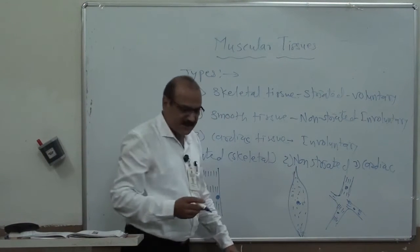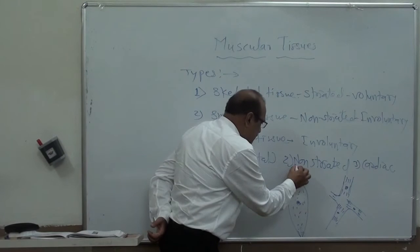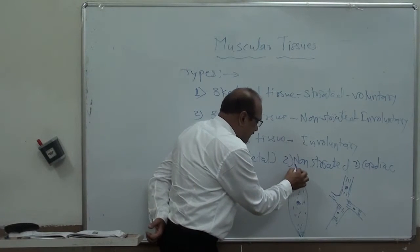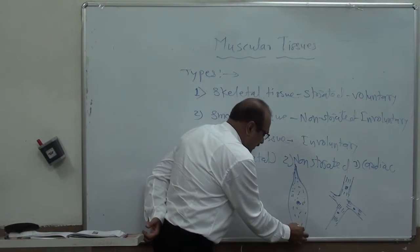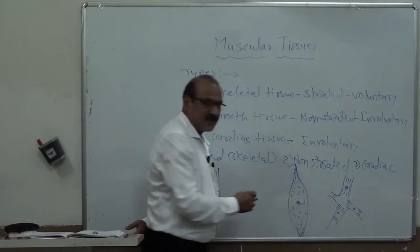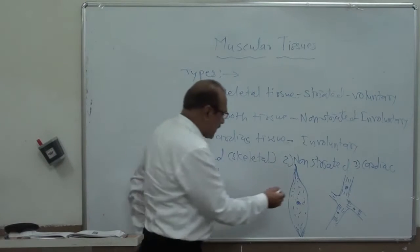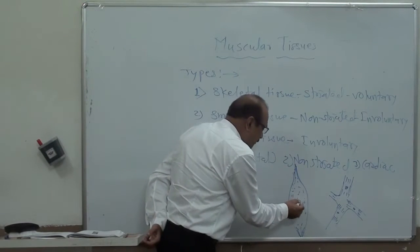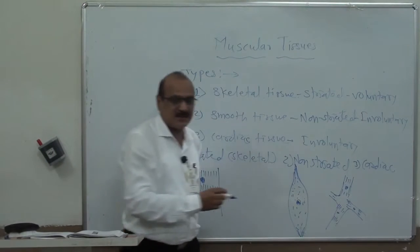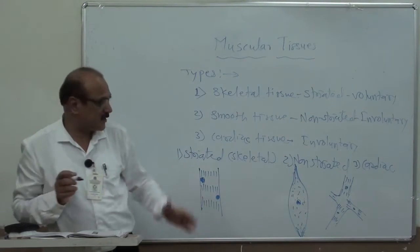In smooth muscles, polar ends are present, and the middle region shows a swelling structure. The nucleus is centrally placed — present in the center of the cell.